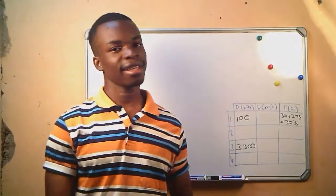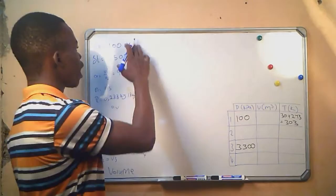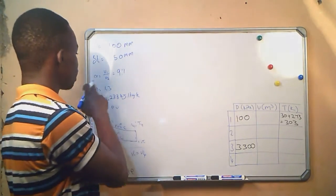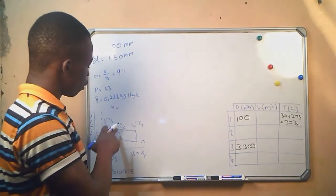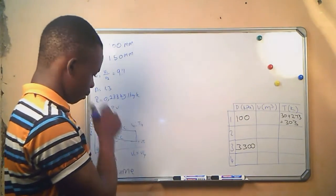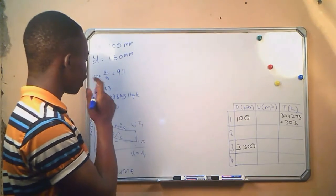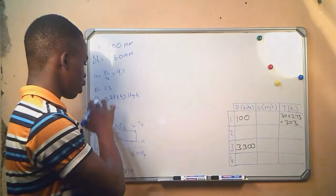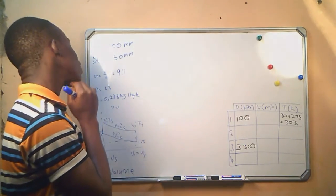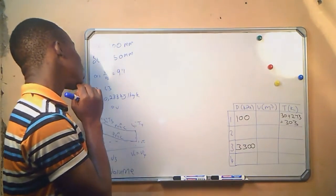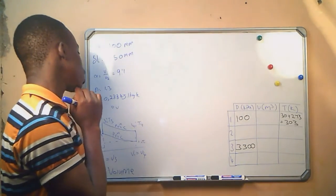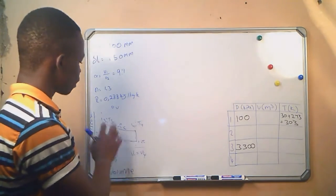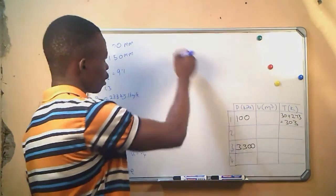This is the information we are given: the diameter of the piston, the stroke length, the compression ratio, and we are told that compression and expansion take place using the polytropic law. We are given the polytropic index, and the gas constant as 0.288 kilojoules per kg Kelvin. This is the graph that represents the auto cycle.